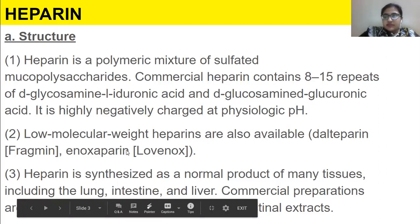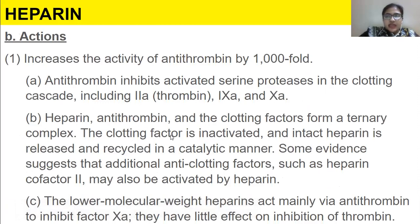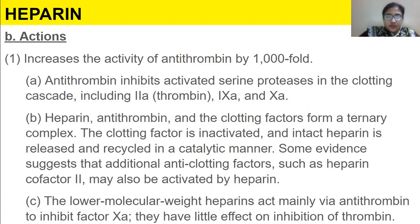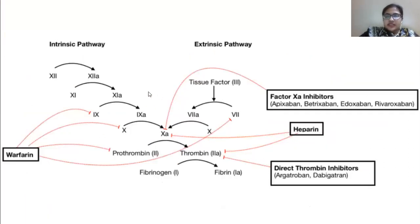The actions of heparin include that it increases the activity of antithrombin by 1000-fold. Antithrombin inhibits activated serine proteases in the clotting cascade, including factor 2a which is thrombin, 9a, and 10a. I have inserted an image of the clotting cycle so that if you study it, you would know what exactly is acting where.